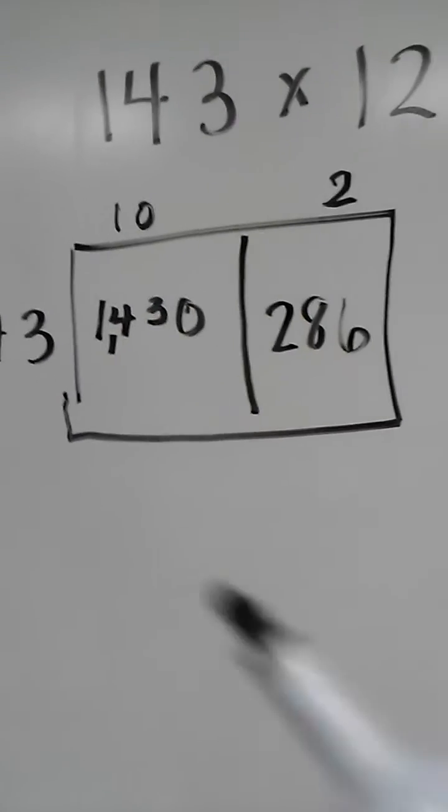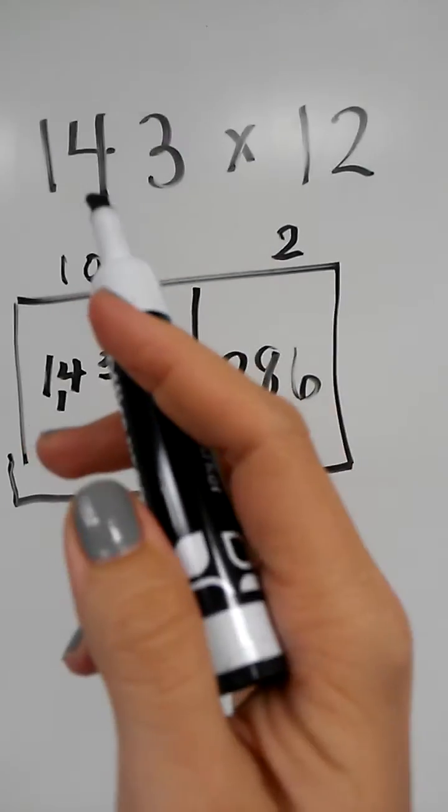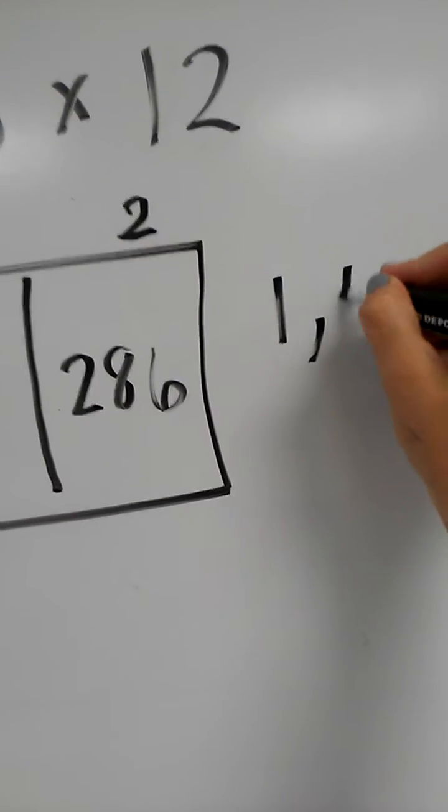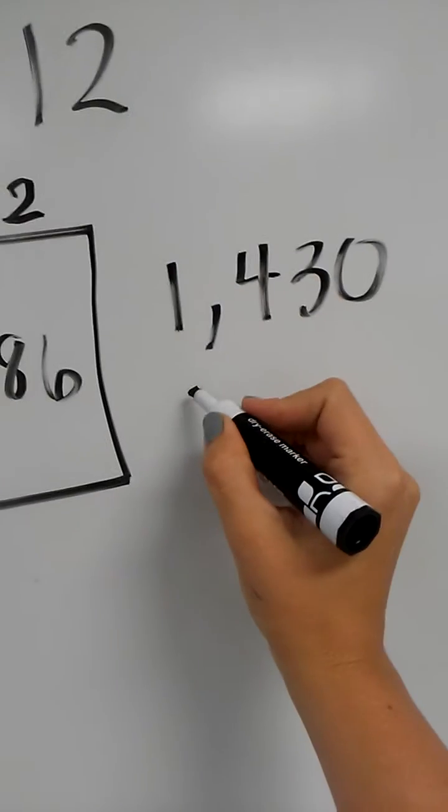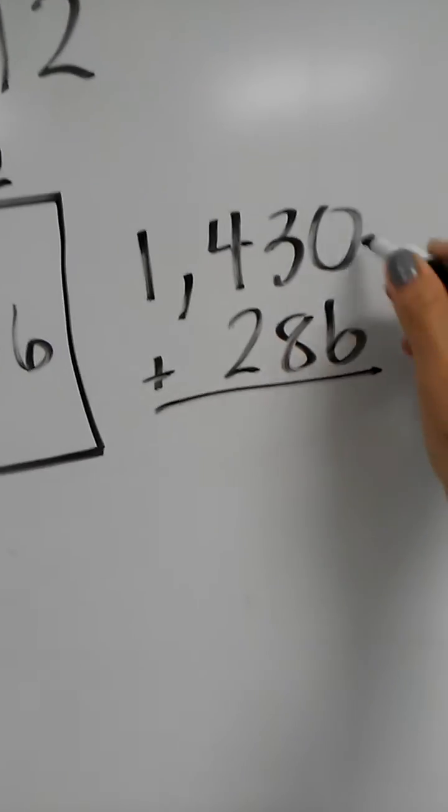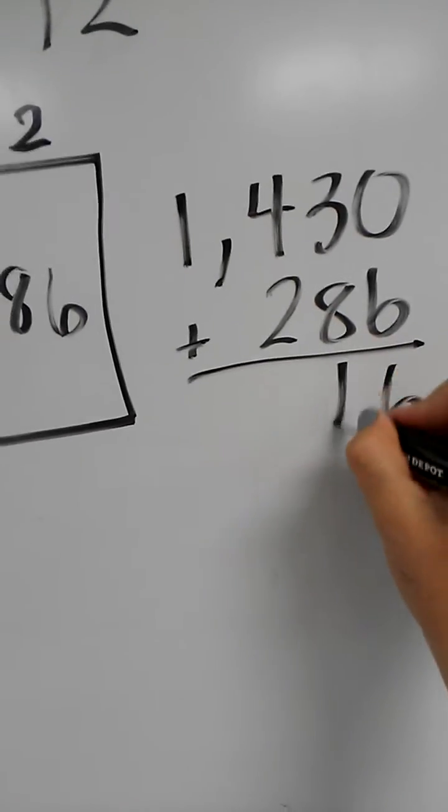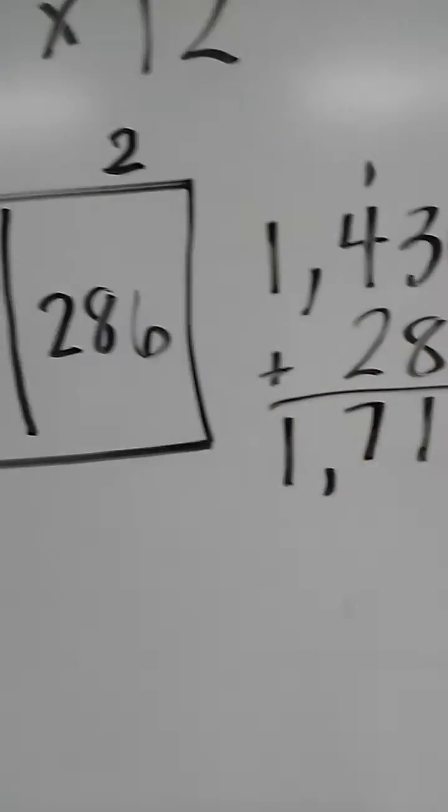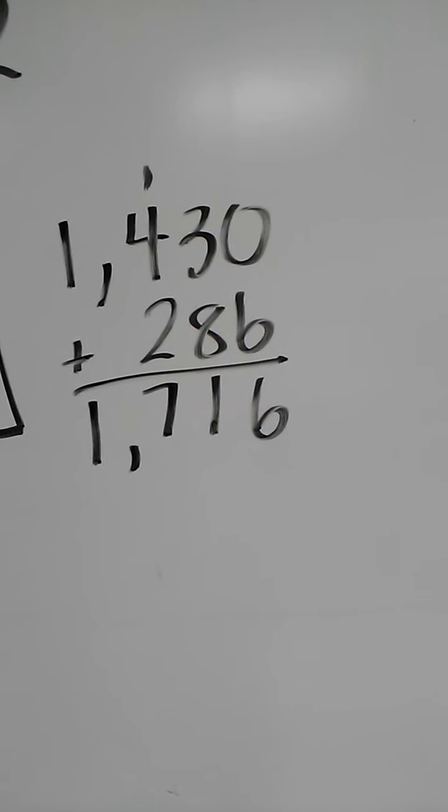Now I've got two partial products for 143 times 12. All I do is add these up: 1430 plus 286. 8 plus 3 is 11, 4 plus 2 plus 1 more is 7, and 1. My answer is 1716.